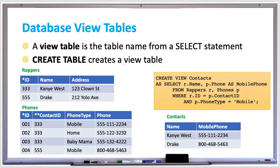If you're using a database that allows view updates, you may encounter an issue where a view insert or update creates a row that does not satisfy the view query's WHERE clause. The inserted or updated row does not appear in the view table, and from the perspective of the database user it appears to fail even though the base tables have changed. You can use the WITH CHECK OPTION clause at the end of your SQL view statement, which causes the database to reject inserts and updates that don't satisfy the view query's WHERE clause, showing an error message that explains the violation.